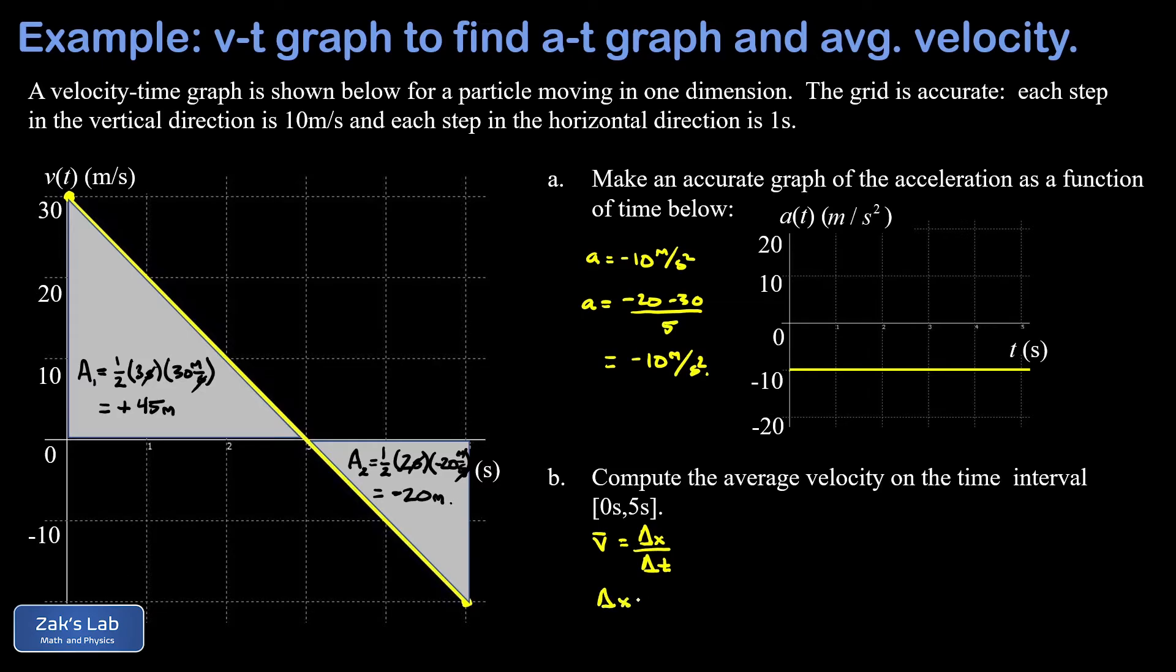So my total displacement during this five-second period is 45 meters in the positive direction. For the first part of the journey, that's when the particle was moving in the positive direction. Then at t equals three seconds, the velocity becomes zero and switches to negative. So the particle starts moving in the negative direction, and the total displacement in that direction was 20 meters. And I end up with a net of 25 meters in the positive direction.